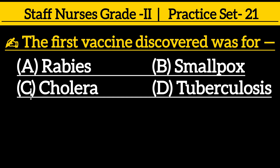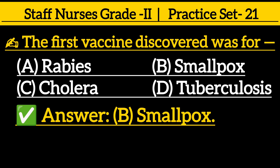The first vaccine discovered was for: Option A, rabies; Option B, smallpox; Option C, cholera; Option D, tuberculosis. Correct answer is Option B, smallpox.